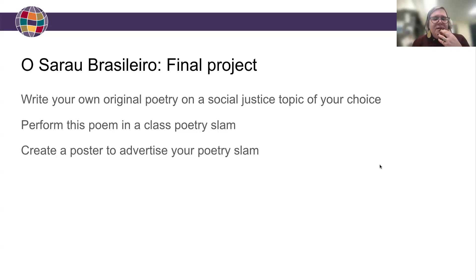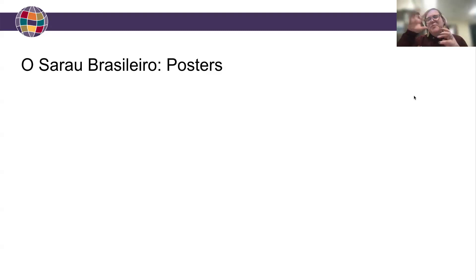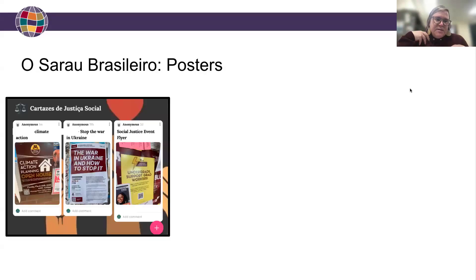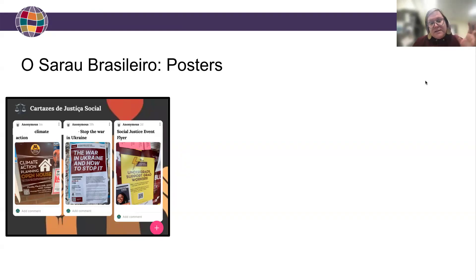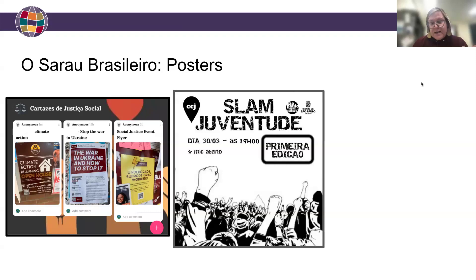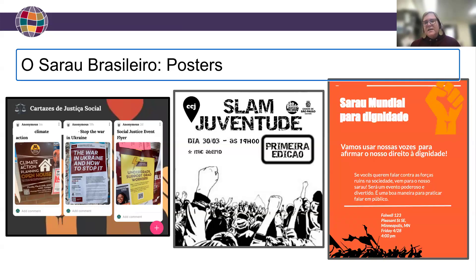The poster work took about two to three days. I asked students to find examples of social justice posters in our university community — they found ones about climate action, stopping the war in Ukraine, and supporting graduate workers trying to unionize. We talked about font, size, colors, and words — how creators made their issues stand out. Then we looked at several examples of sarao advertising posters with those same analytical questions, and then students designed their own posters.